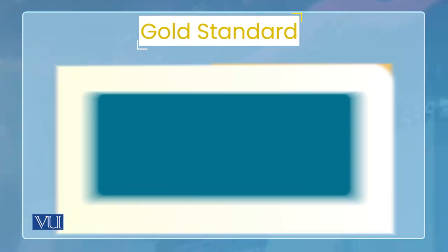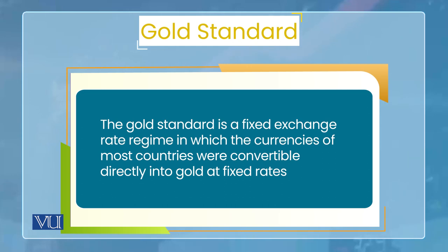اب ہم actual regimes کی طرف جاتے ہیں جو دنیا میں رائج رہے — یہ یا fixed ہوں گے، یا floating، یا managed floating۔ پہلا system جو دنیا میں international transactions کے لیے رائج رہا وہ ہے gold standard۔ Gold standard کے تحت ہر currency کی value gold کی terms میں determine ہوتی ہے۔ مثلاً اگر ایک currency دو ounces gold کے برابر ہے اور دوسری چار کے برابر، تو ان کا آپس کا exchange rate دو ہو جائے گا۔ یہ system World War One سے پہلے تک دنیا میں رائج تھا۔